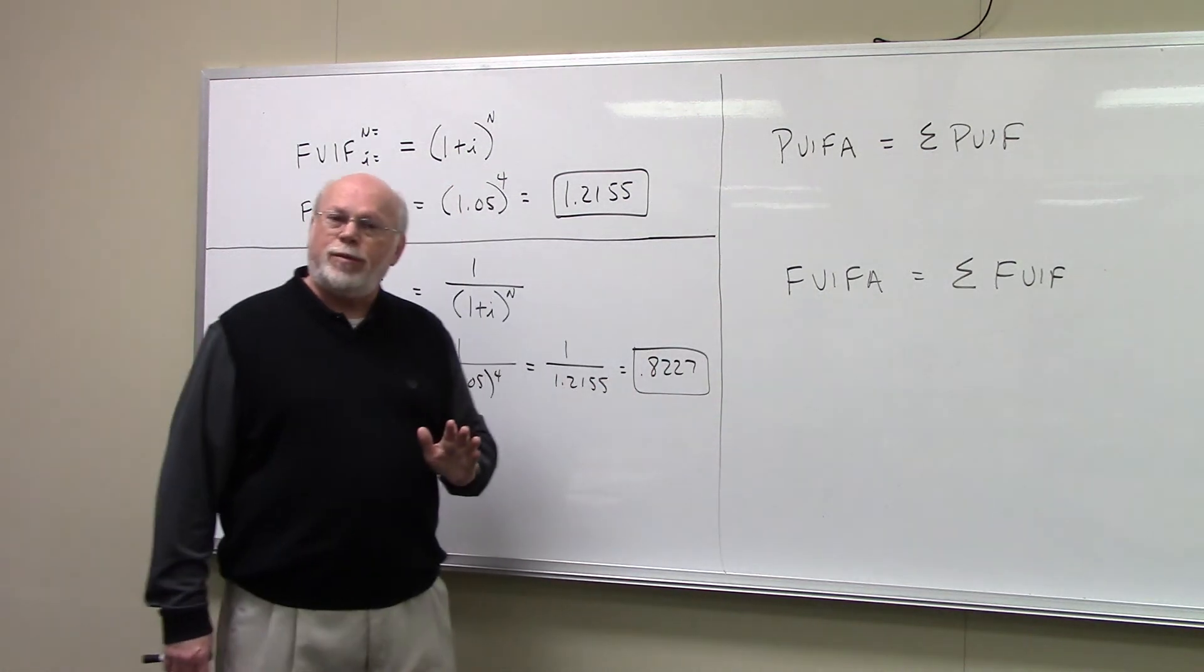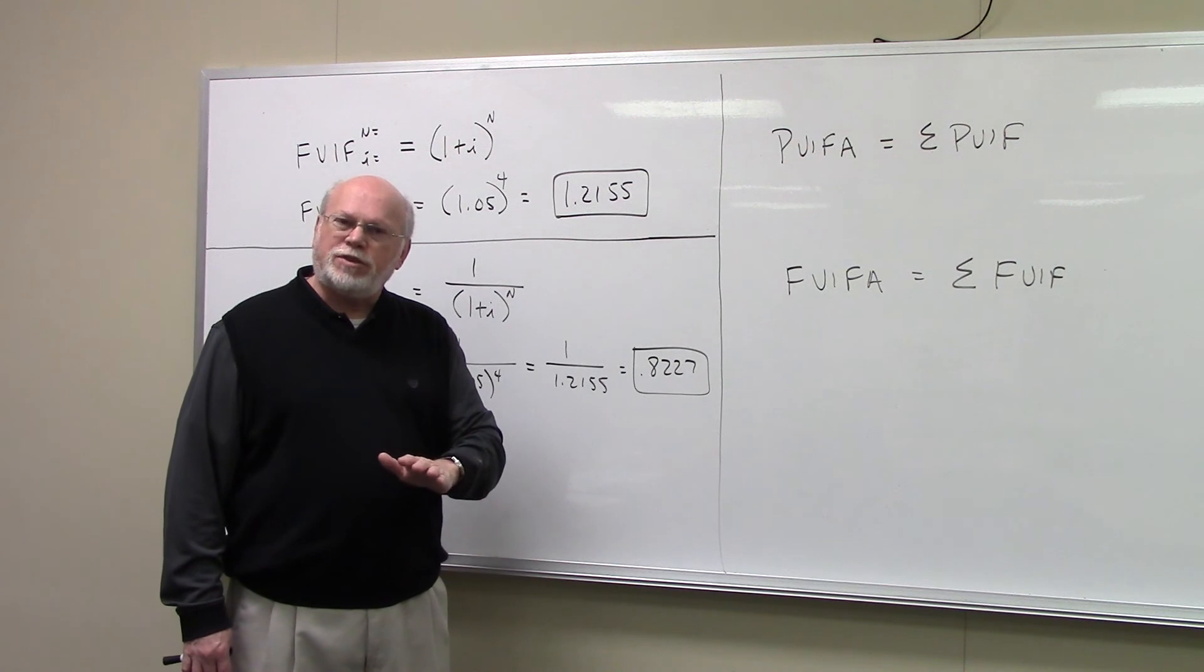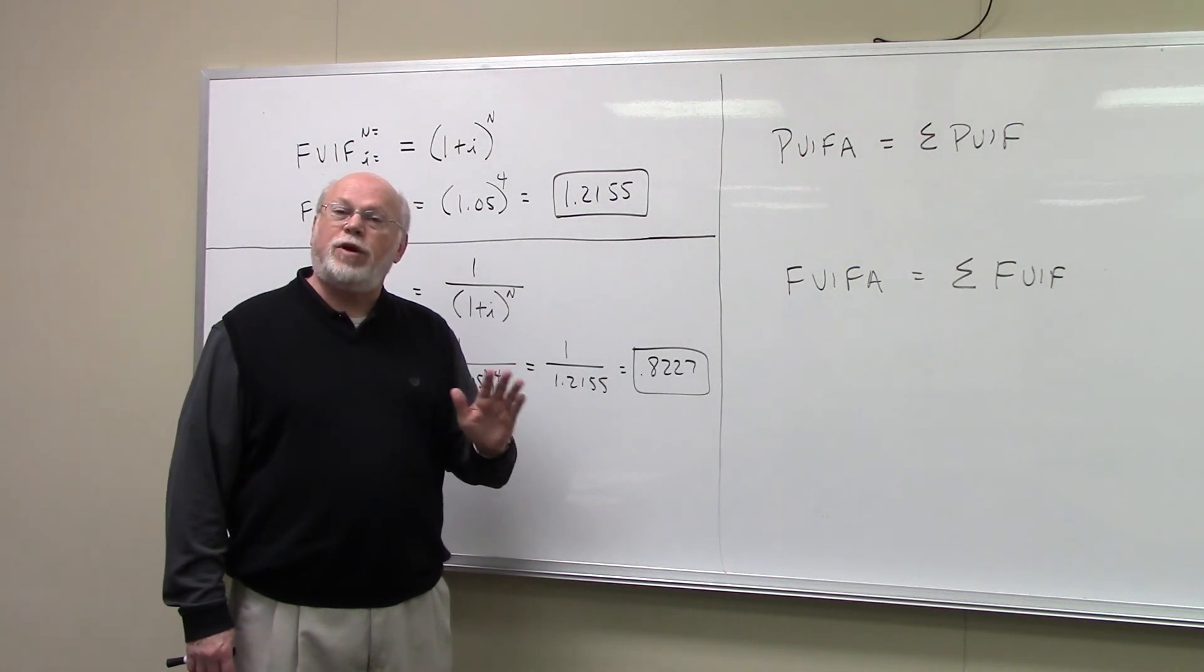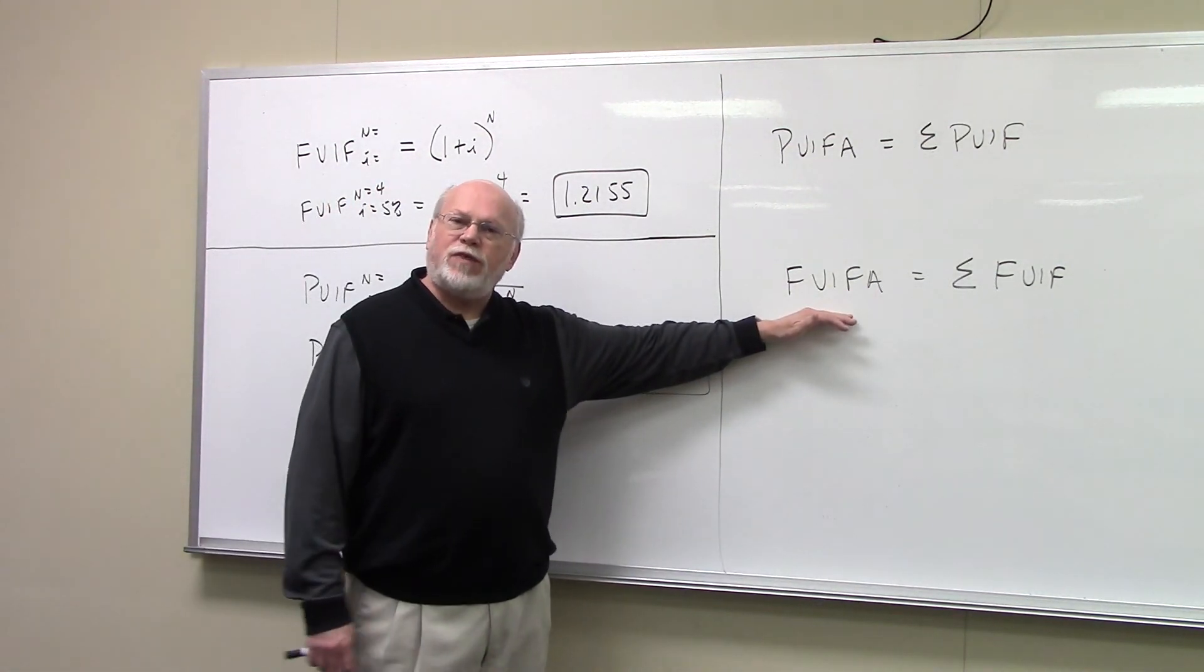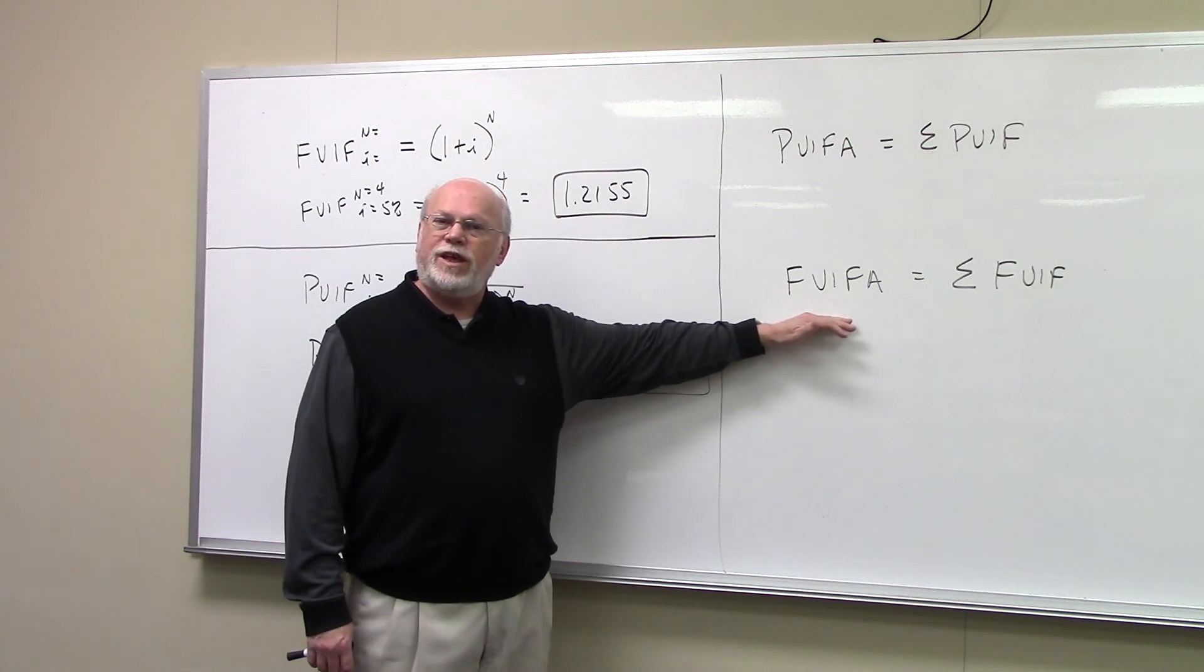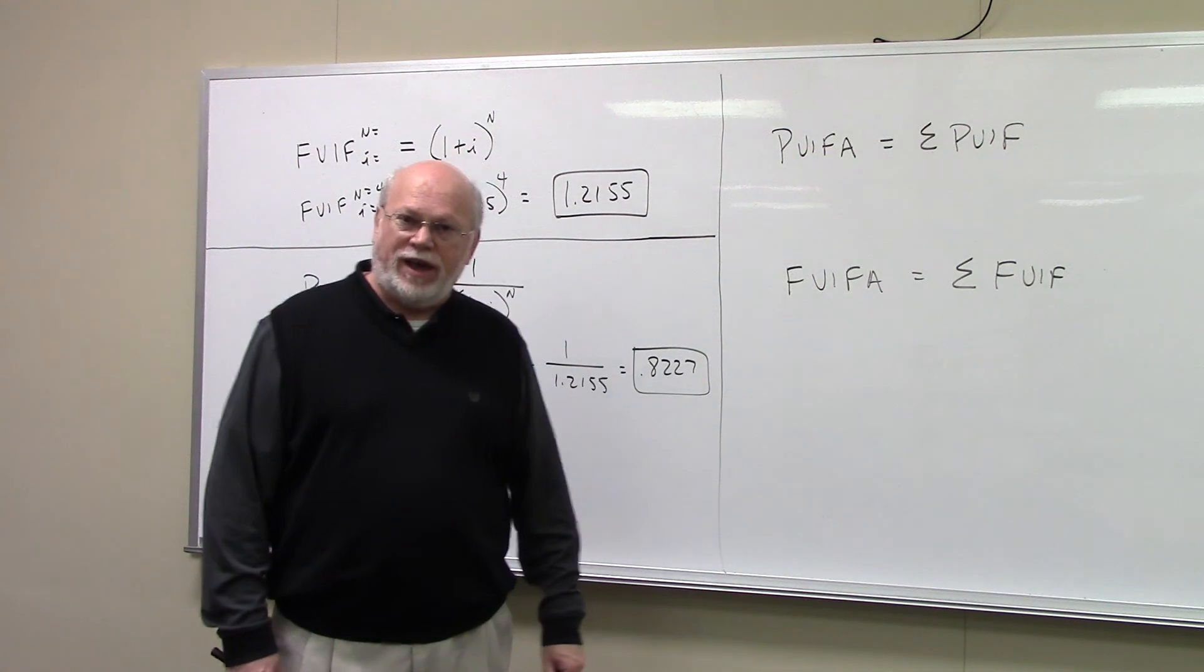The annuity table, your PVIFA table, is the sum of the lump sum table. That is the sum of your present value interest factor table. Guess what future value interest factor for an annuity, your FVIFA table? It's equal to the sum of your FVIF table. Congratulations to you!